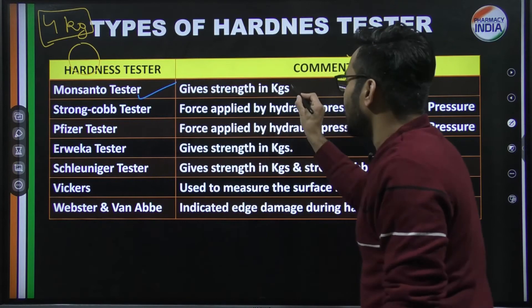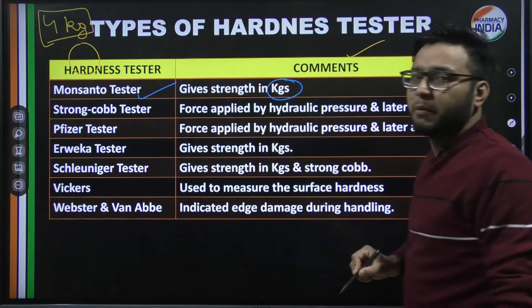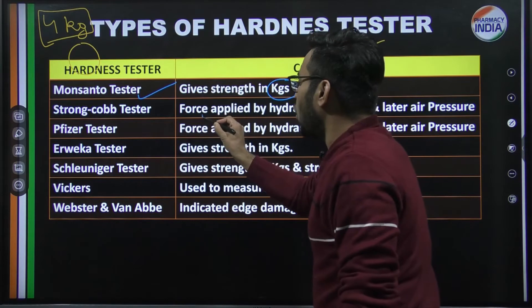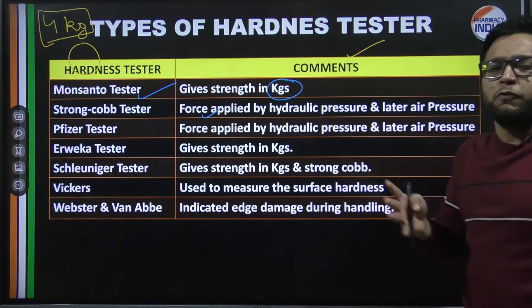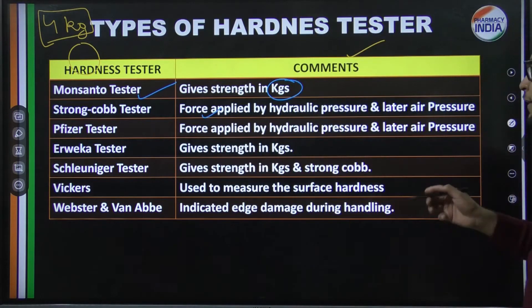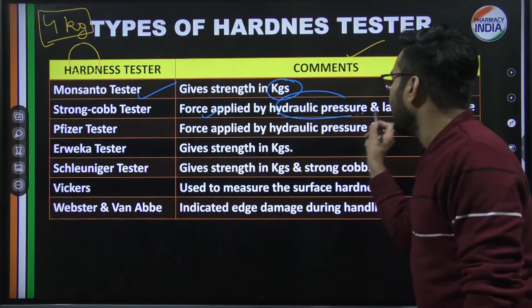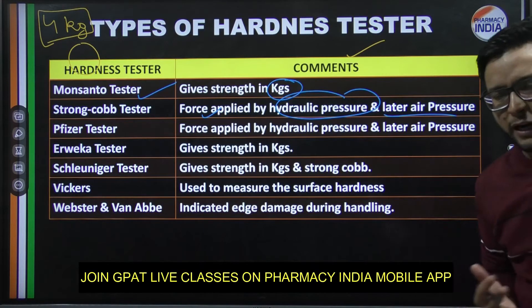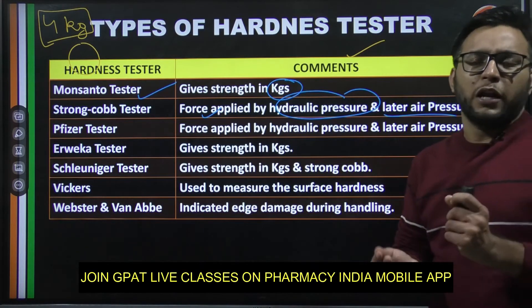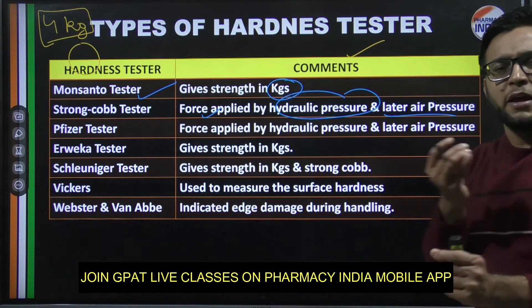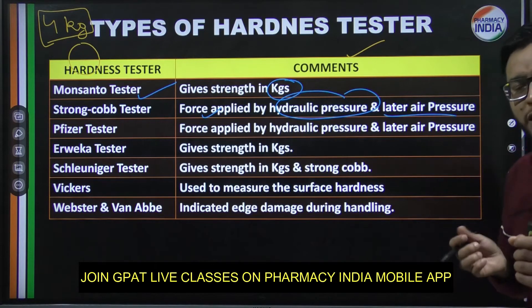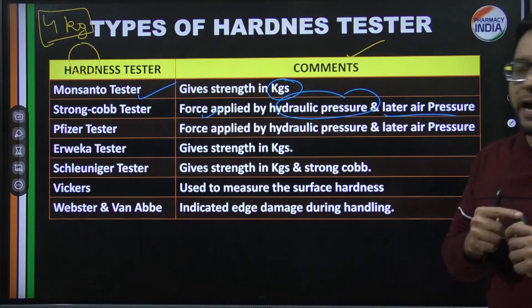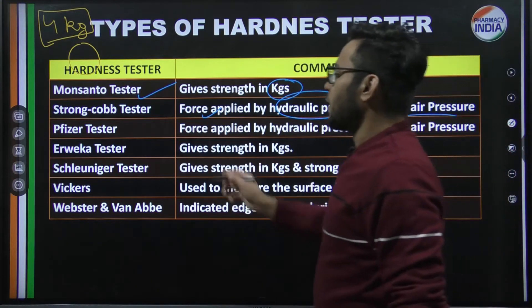Next is Strong and Cobb. In Strong and Cobb, the force is applied first by hydraulic pressure and later by air pressure. So starting with hydraulic pressure, then air pressure is used to check the hardness of the tablet.